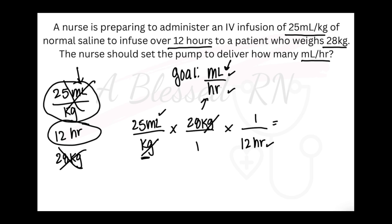Now I will multiply across the top, multiply across the bottom, then divide the top by the bottom. So 25 times 28 is going to be 700. 12 times 1 times 1 is 12. We'll divide 700 by 12, and we will get 58.3 repeating. So if we round this to the nearest whole number, we will have 58 milliliters per hour.